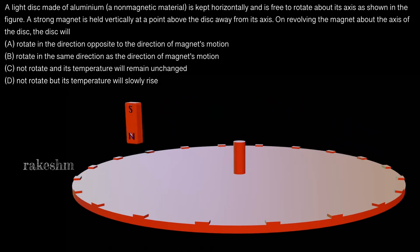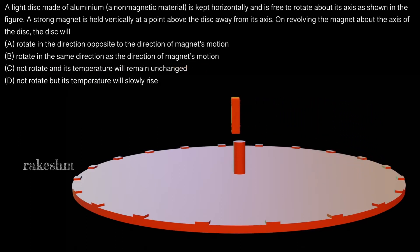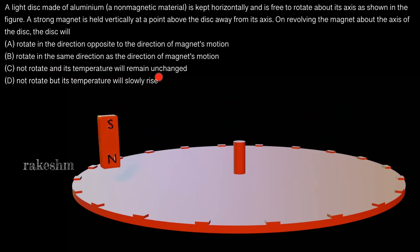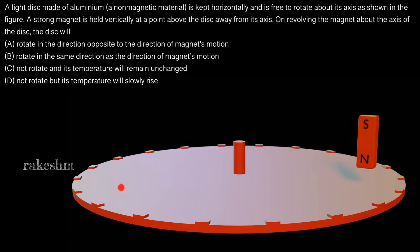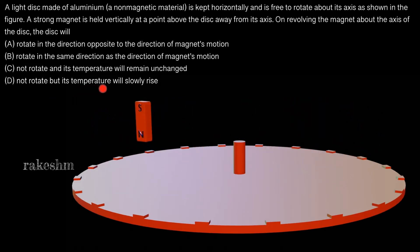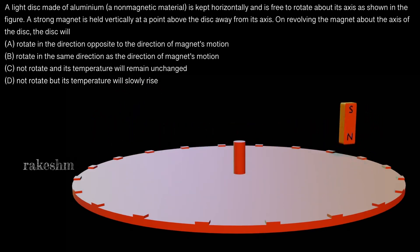The second option is that the disc rotates in the same direction as the magnet's motion. The third option is that the disc will not rotate and its temperature will remain unchanged. The fourth option is that the disc will not rotate but its temperature will slowly rise.